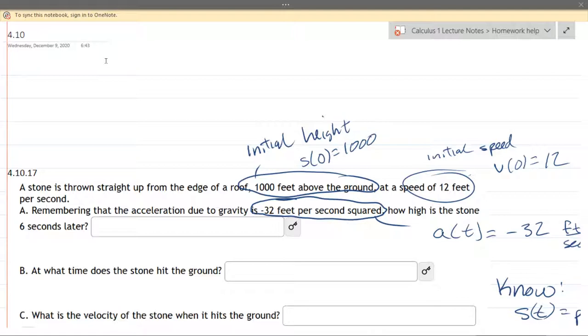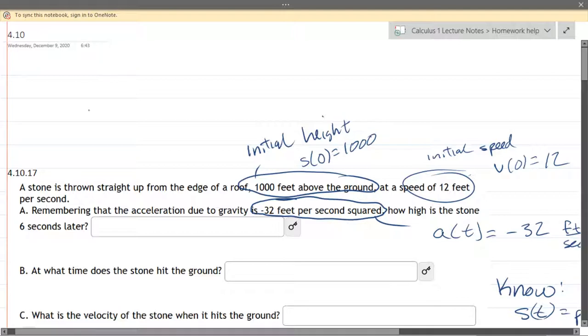Not every problem is going to tell you it's negative. Gravity is going to be negative, but you do need to remember that gravity is pulling downwards and generally your axis will be oriented upwards so you're almost always going to have a negative gravitational acceleration.